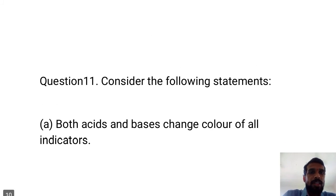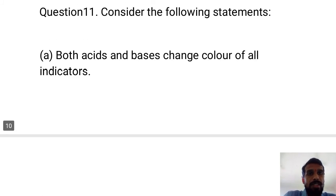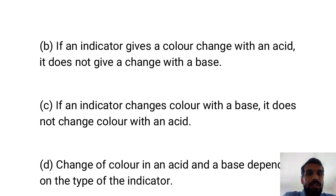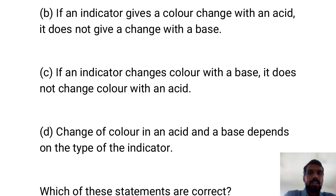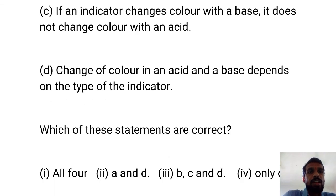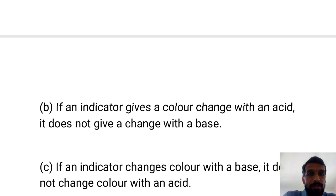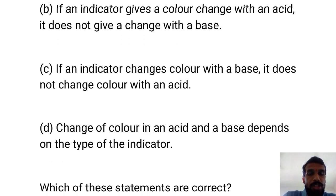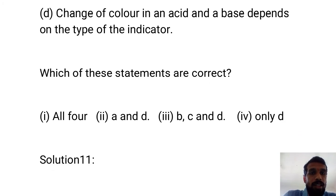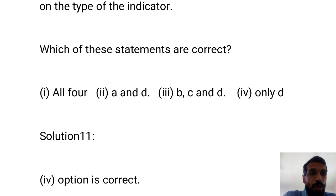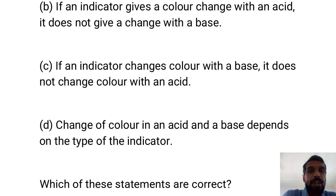Last question 11: Consider the following statements — A: Both acids and bases change color of all indicators. B: If an indicator gives a color change with an acid, it does not give a change with a base. C: If an indicator changes color with a base, it does not change color with an acid. D: Change of color in an acid and a base depends on the type of indicator. The correct answer is D only — change of color in acid and base depends on the type of indicator.